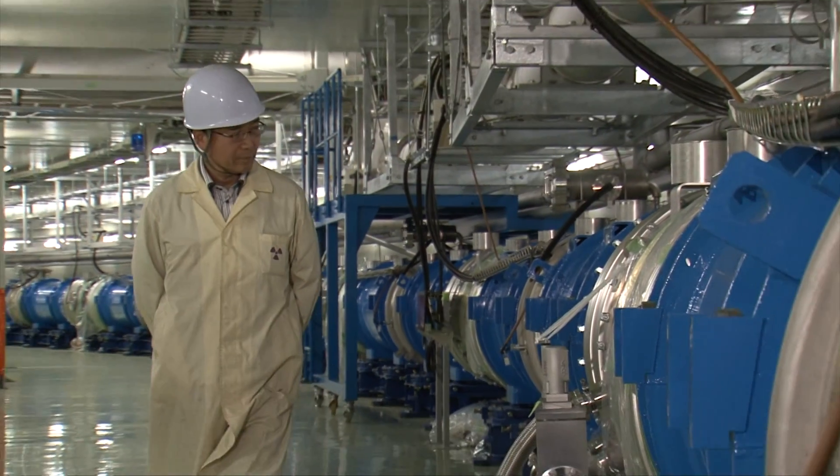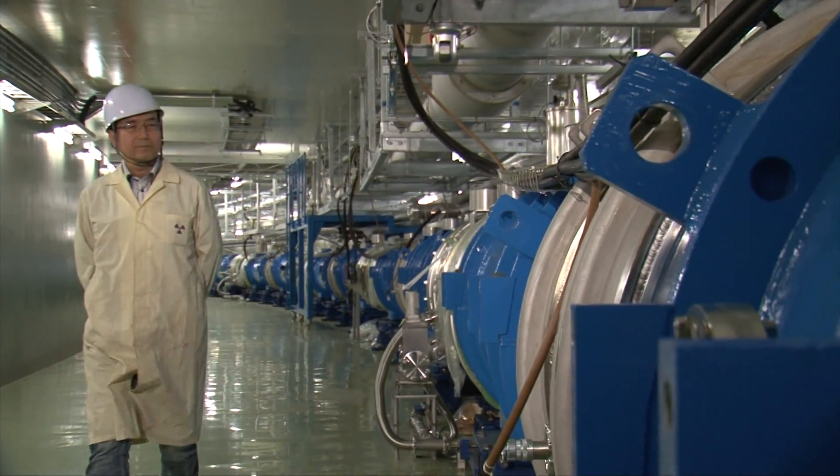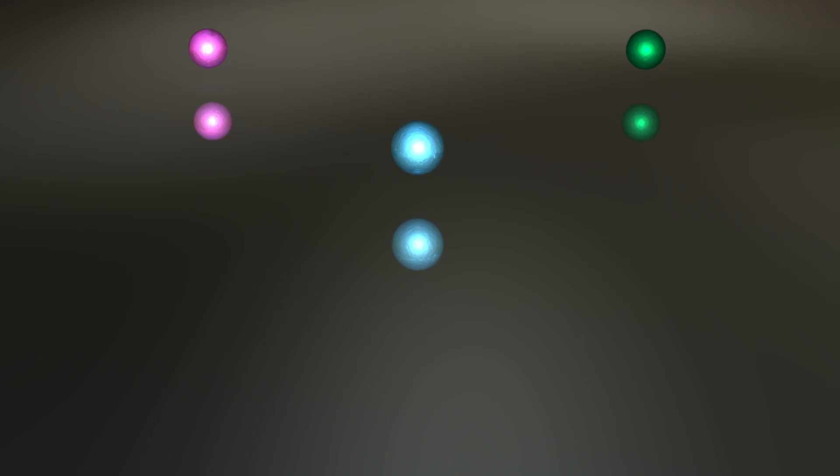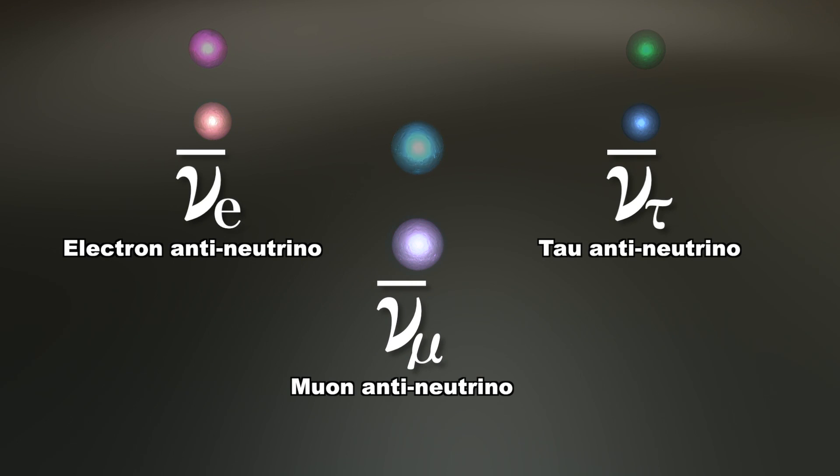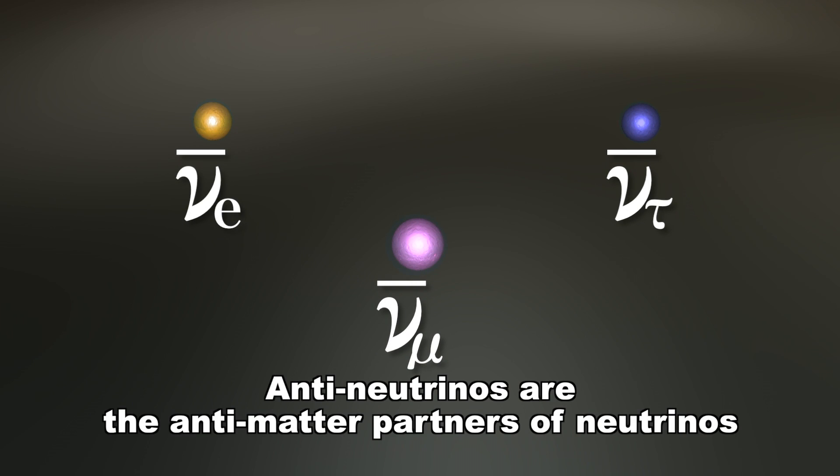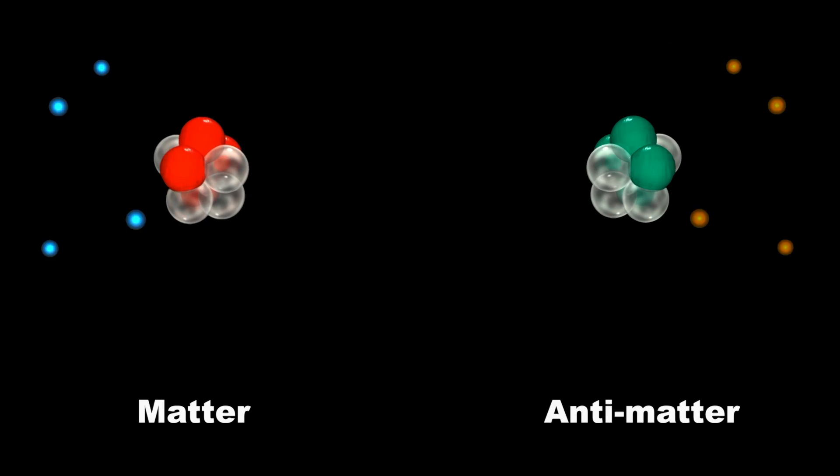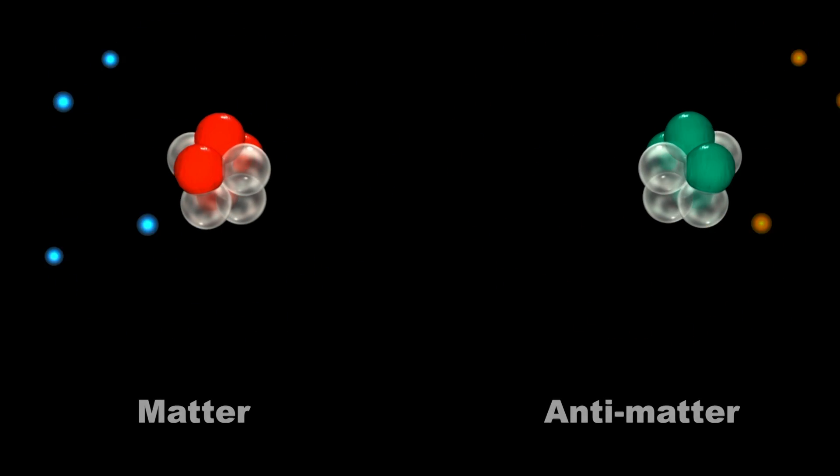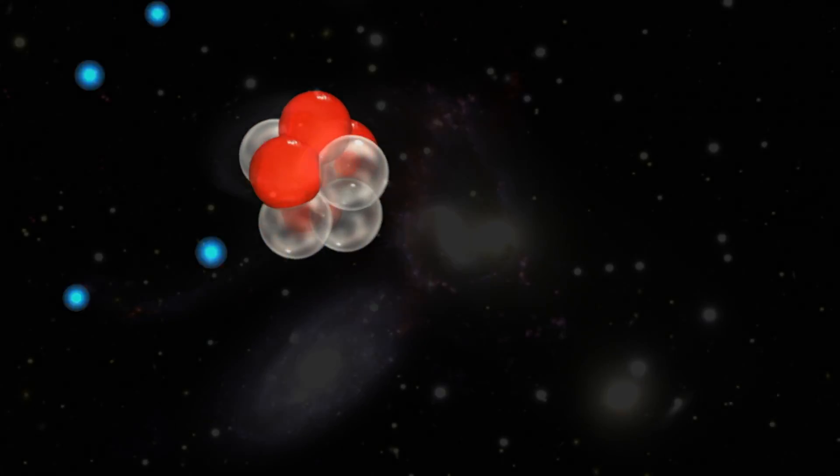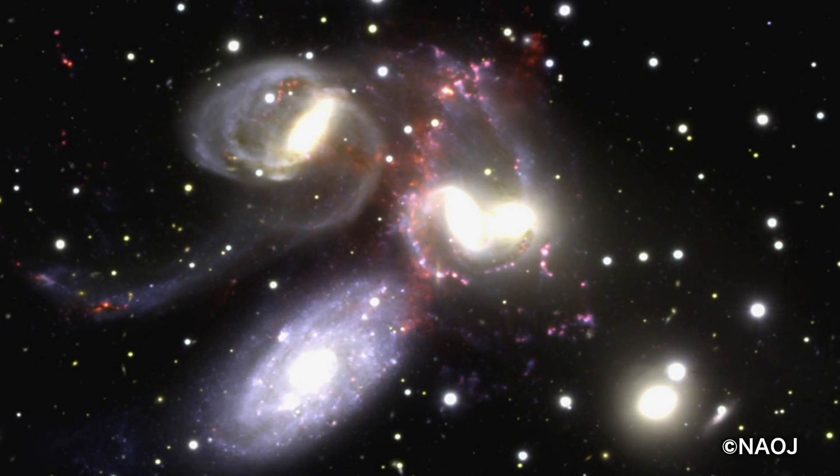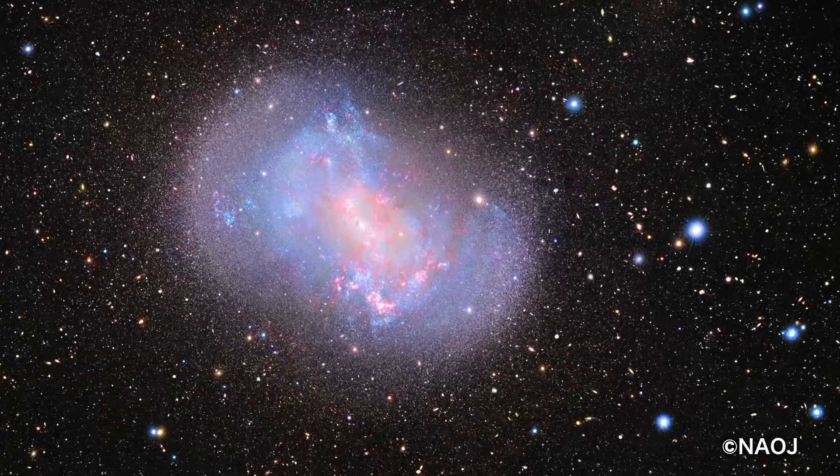From 2014, T2K will operate with an anti-neutrino beam instead of the original neutrino beam. Anti-neutrinos are the antimatter counterpart to neutrinos. Matter and antimatter must have been created in equal amounts in the Big Bang and would have annihilated into nothing if matter and antimatter behaved in exactly the same way.